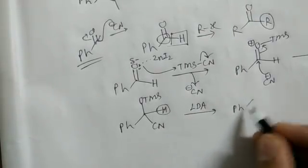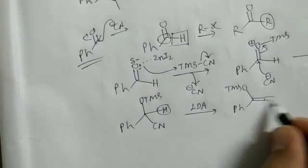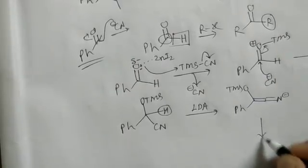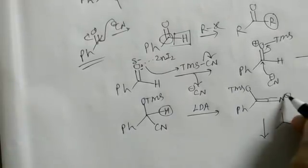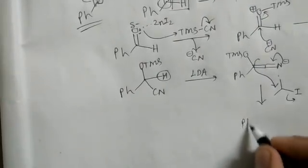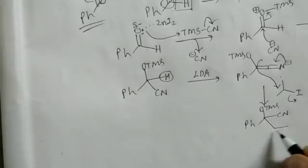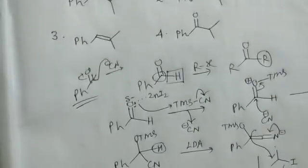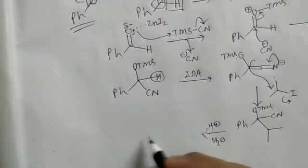After LDA deprotonation, you get an O-TMS intermediate where the negative charge is stabilized by the cyanide group. Isopropyl iodide is then added, and the carbanion attacks it, performing alkylation to give Ph-C(OTMS)(CN)(isopropyl).